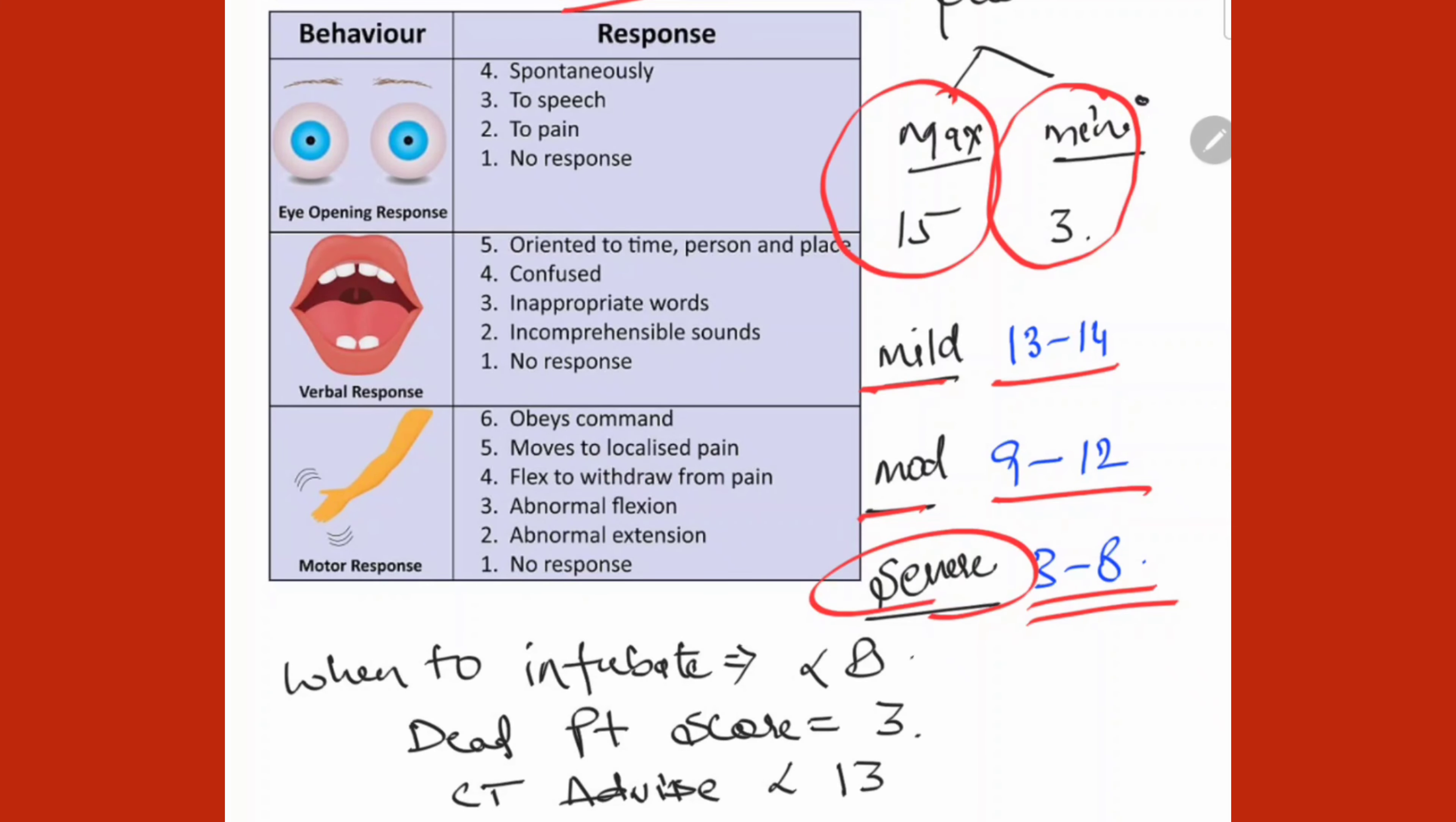First question asks what's maximum, everyone knows 15. What's minimum, everyone knows 3. Then they ask, if a patient has died, what will be the GCS? So minimum, answer is 3. Second question: when will we do CT scan in case of emergency? Answer is if GCS is less than 13, we need to advise NCCT.